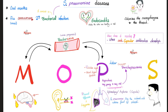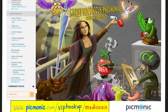Strep pneumo loves your alveoli. Why? Because during pneumonia, the alveoli are filled with fluid (consolidation), and this alveolar fluid is very rich in nutrients. And as you know, strep pneumo is fastidious — it thrives in nutrient-rich environments.